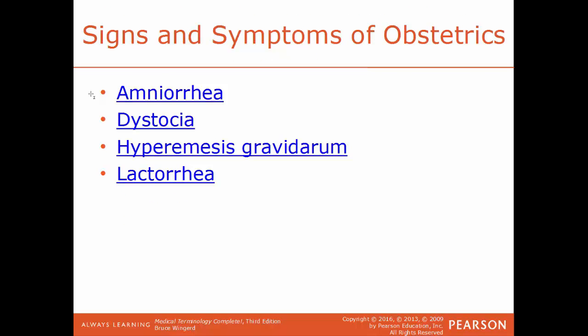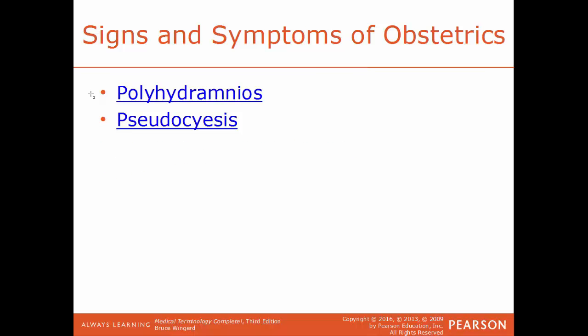Signs and symptoms of obstetrics: amniuria is a flow or discharge of amniotic fluid from the amniotic sac. Dystocia is having a difficult birth, caused by an awkwardly positioned fetus, a small pelvis, or failure of the uterus to contract or cervix to dilate normally. Hyperemesis gravidarum is the technical name for morning sickness — severe nausea and vomiting while pregnant, several times a day, lasting weeks or the entire pregnancy. Lactouria is spontaneous and excessive milk production from the breast regardless of nursing. Polyhydramnios is an excessive buildup of amniotic fluid around the fetus. Pseudocyesis is the technical term for a false pregnancy.